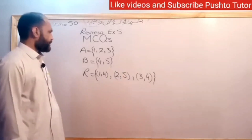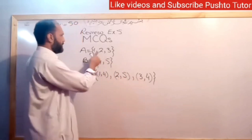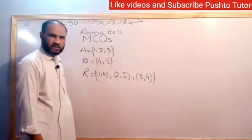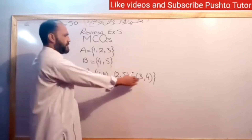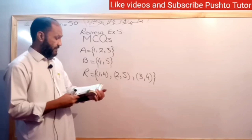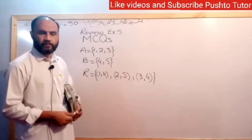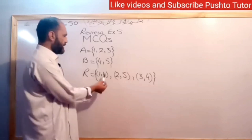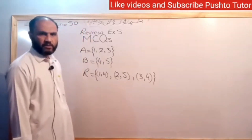Now, let's check. The domain of the relation gives us {1, 2, 3} — the same as the first set A. The condition for a function is that the first elements should have no repetition. Here there is no repetition in the first elements, so it is a function. For it to be a one-to-one function, the condition is that the second elements should also have no repetition. The second element 4 is repeated — that is a repetition, so it is not a one-to-one function.